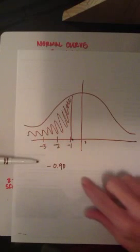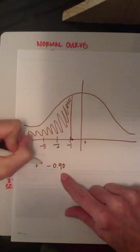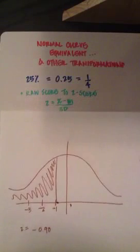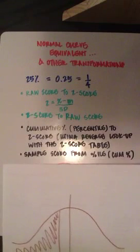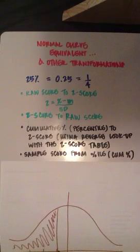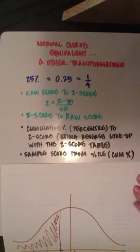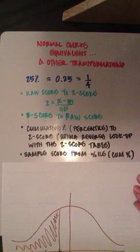So in other words, we have now found our z-score by starting with a percentile. In addition to this, you can also find a sample score from a percentile or cumulative percentile, and we'll actually go over how to do that in class.